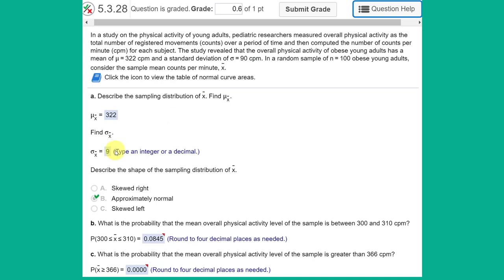So with that we can answer the next question which is describe the shape of the sampling distribution of X bar. Remember because of the central limit theorem if we have a large enough sample size, a large enough n, and we generally say that's 30, then the distribution of the sampling distribution will always be approximately normal regardless of the distribution shape of the overall population.